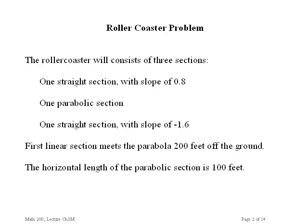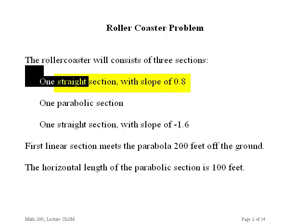Other than that, we're going to use his basic design. So this roller coaster will consist of three sections: a straight section going up with a slope of 0.8, a parabolic section opening downward that takes us over a bend, and another straight section with a down-going slope of minus 1.6. The first linear section meets the parabola 200 feet off the ground, and the horizontal length of the parabolic section is 100 feet.